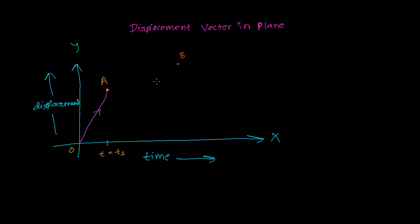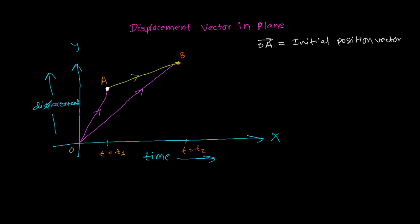After a certain time, the object moves to point B. The object reached B at time t2. So at t1 the object was at point A, and at t2 the object is at point B. The position of B is represented by vector OB, which is the final position vector. OA is the initial position vector and OB is the final (or terminal) position vector.